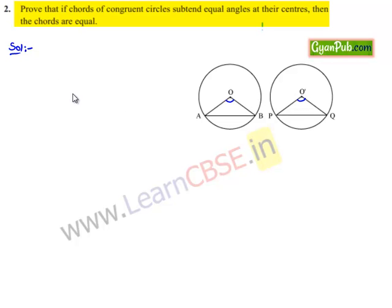Let us note the given information: there are two congruent circles with centers O and O', and the angles subtended by the chords at the center are equal. Therefore, angle AOB is equal to angle PO'Q.